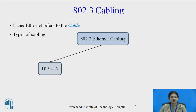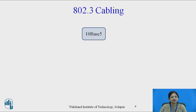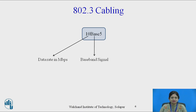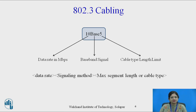The types of cabling are 10Base5, 10Base2, 10BaseT, and 10BaseF. In this naming convention, '10' stands for data rate in Mbps, 'base' refers to baseband signaling, and the last character indicates the cable type or length limit. So the name indicates the data rate, signaling method, and maximum segment length or cable type.